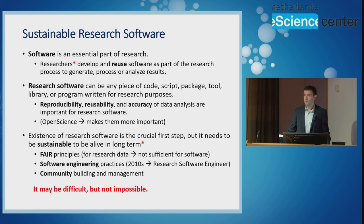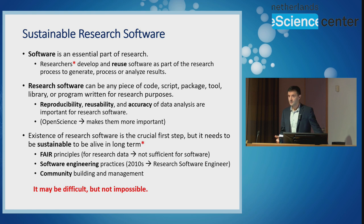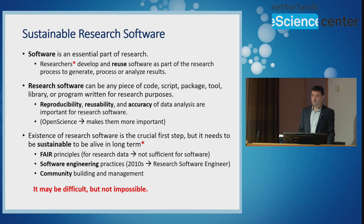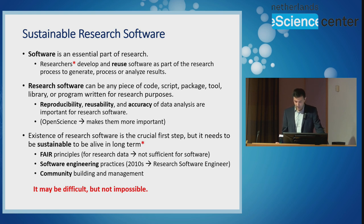So what can we do to make research software sustainable? There are several options available. We have the FAIR principles — to make it Findable, Accessible, Interoperable, and Reusable — but these principles mainly come from research data management practices and, to be honest, they are not sufficient for research software, which is a much more complex product compared to research data. What we need additionally are software engineering principles and practices such as version controlling, branch feature design, unit testing, and continuous integration. These practices help research software to be more maintainable and sustainable.